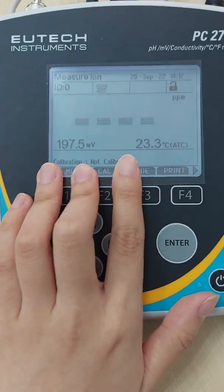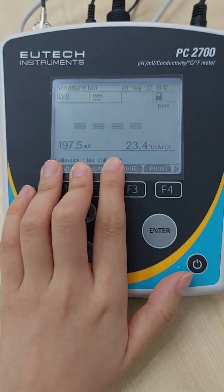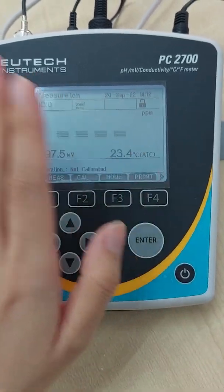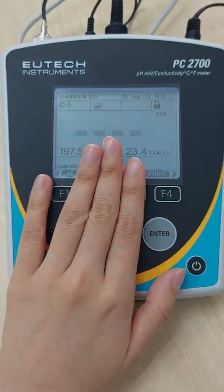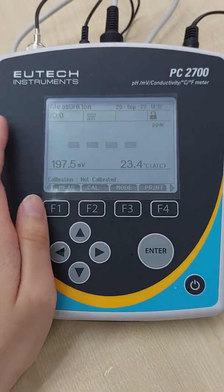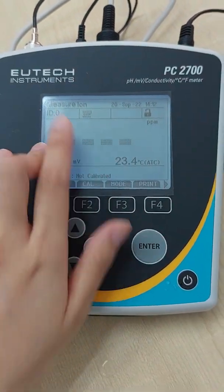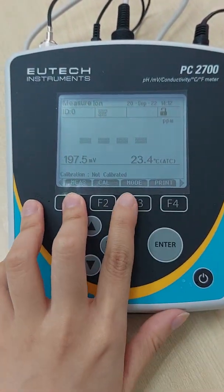So ion is depending on what kind of ion you want to measure. Let's say if you want to measure calcium ion, then you will need to get a separate calcium probe. Let's say you want to measure sodium ion, then you need to get a separate sodium probe.